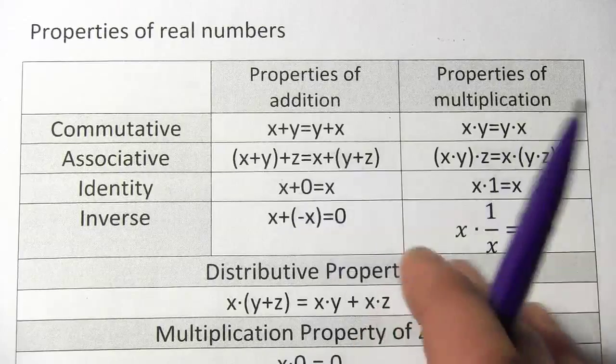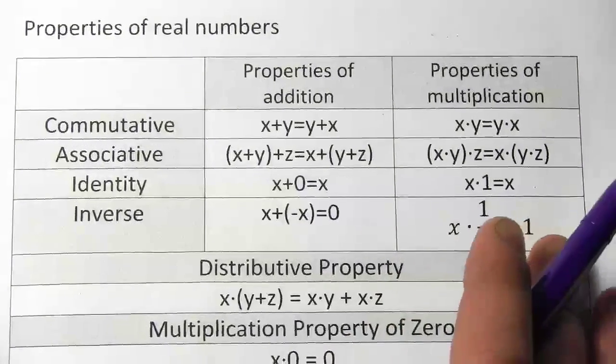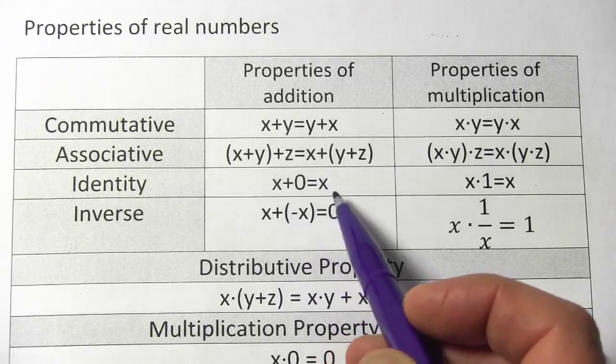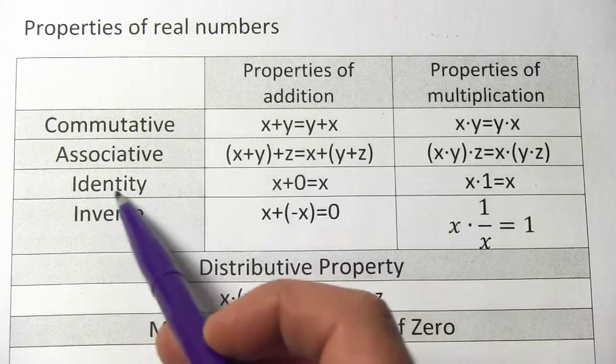The identity property, a little bit different in addition and multiplication. In addition, the identity property says that if you add zero to anything, it stays the same, it stays itself, it maintains its identity.